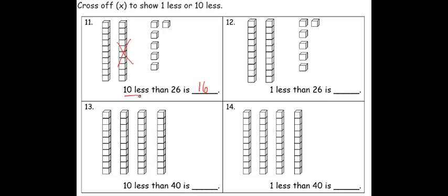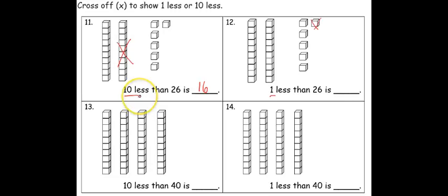Going across, one less than twenty-six is blank, so this time I'm going to cross off one cube. I still have my two groups of ten, but this time I have five cubes. So one less than twenty-six is twenty-five.